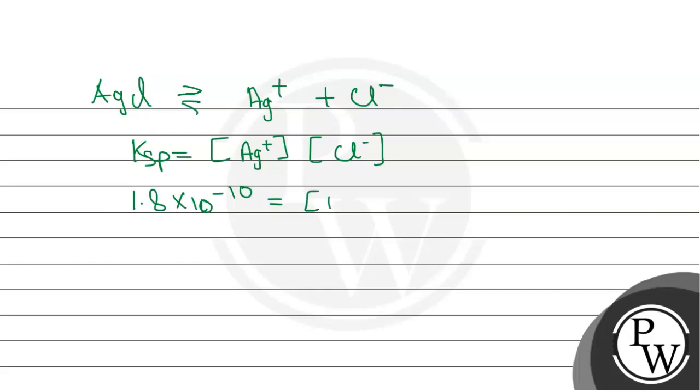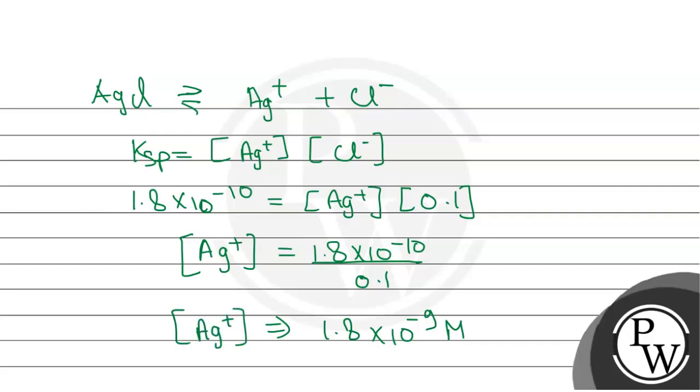Ag+ concentration we need to find, and Cl- is equal to 0.1. Ag+ concentration equals 1.8 × 10^-10 divided by 0.1. After calculation, it equals 1.8 × 10^-9. So this is our Ag+ concentration.